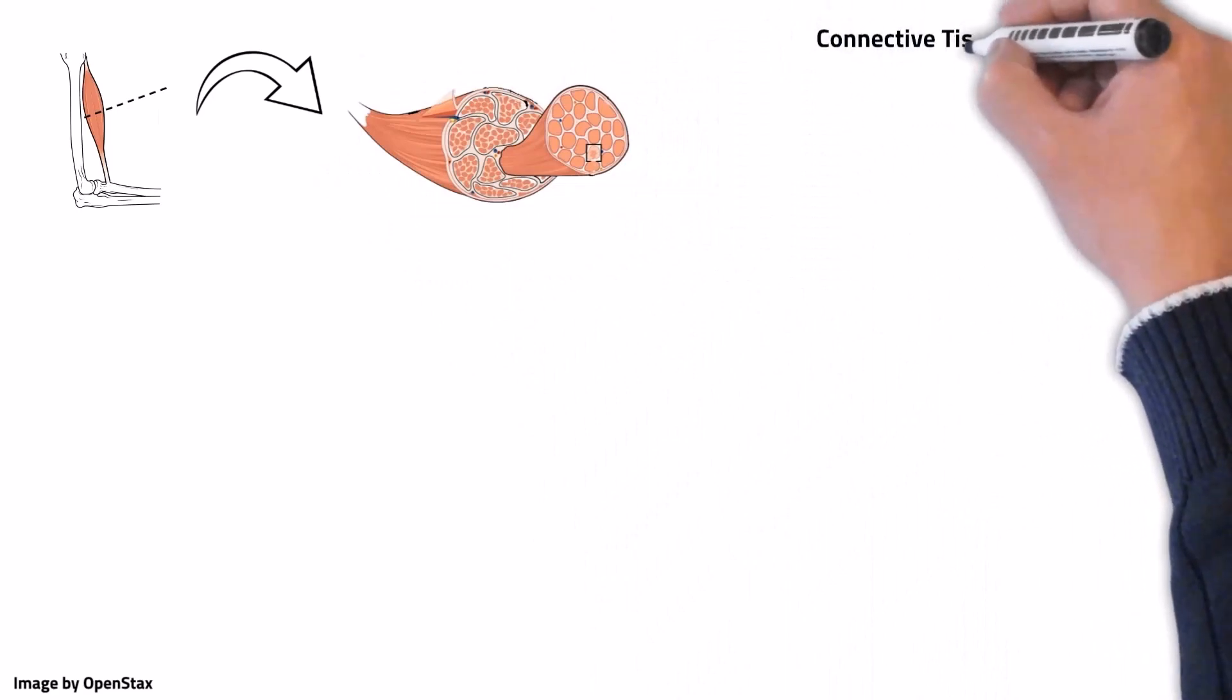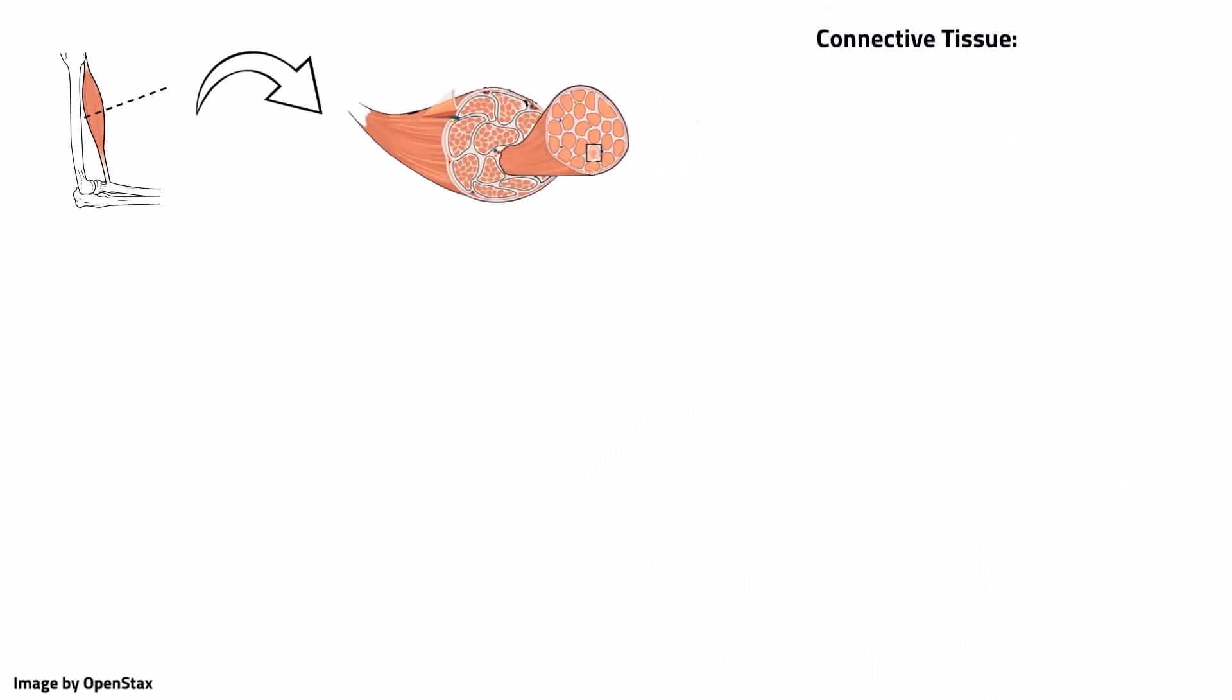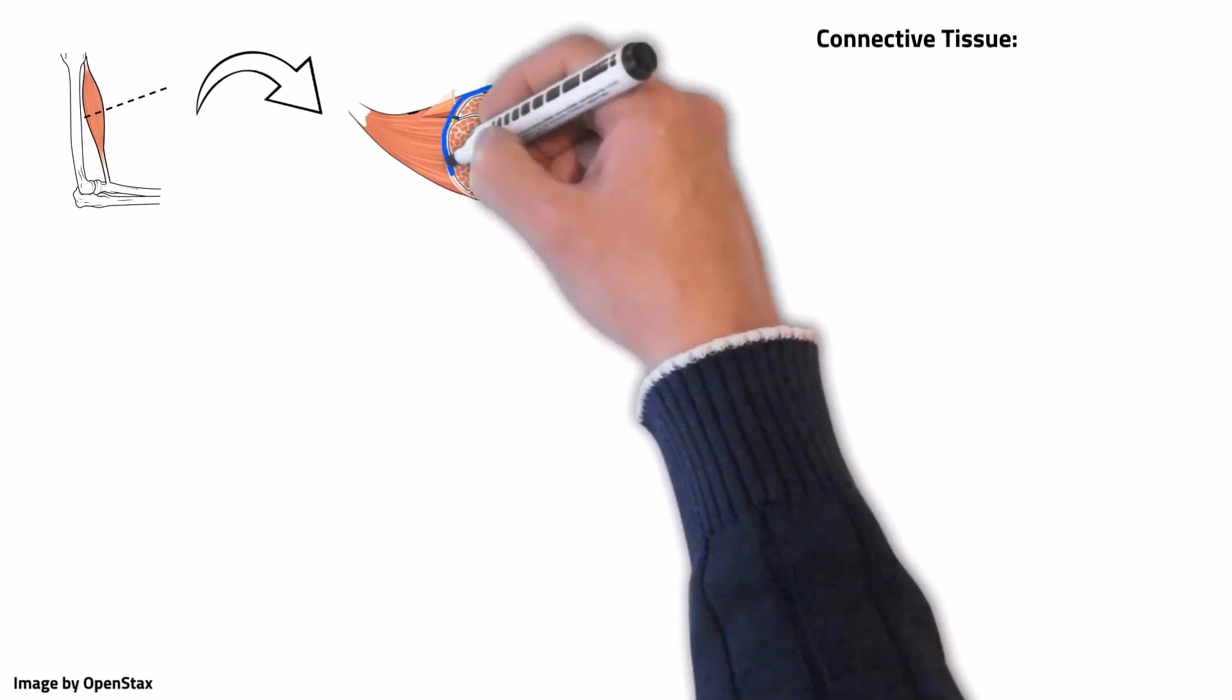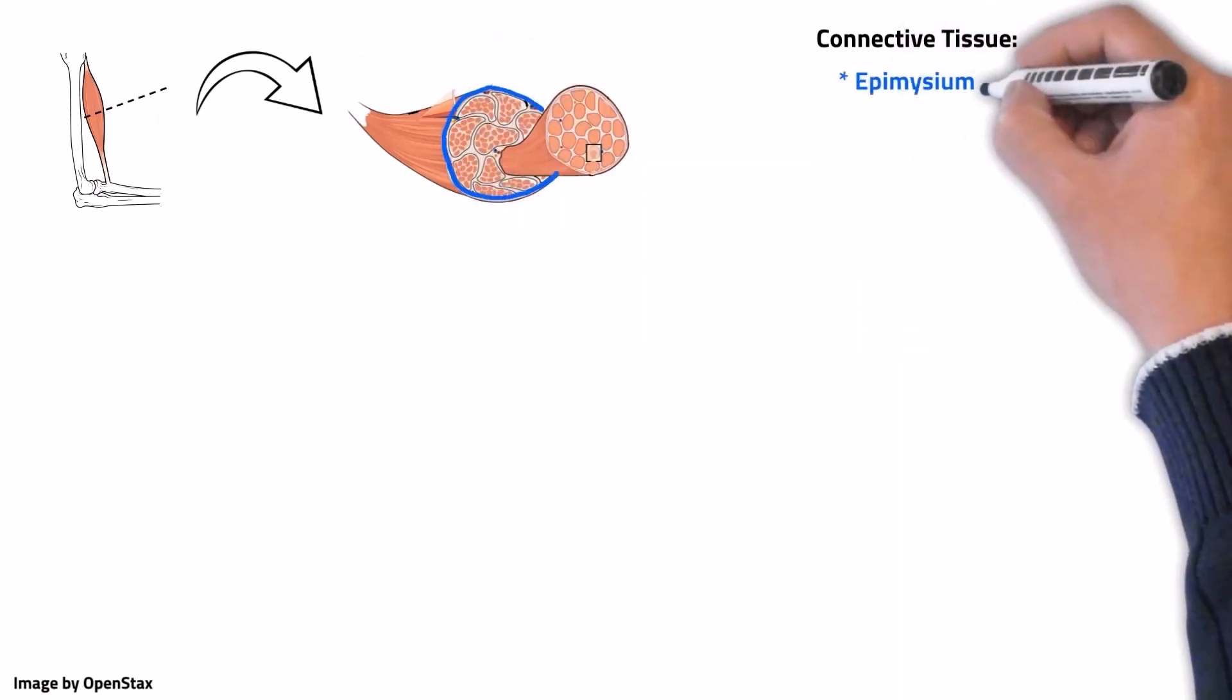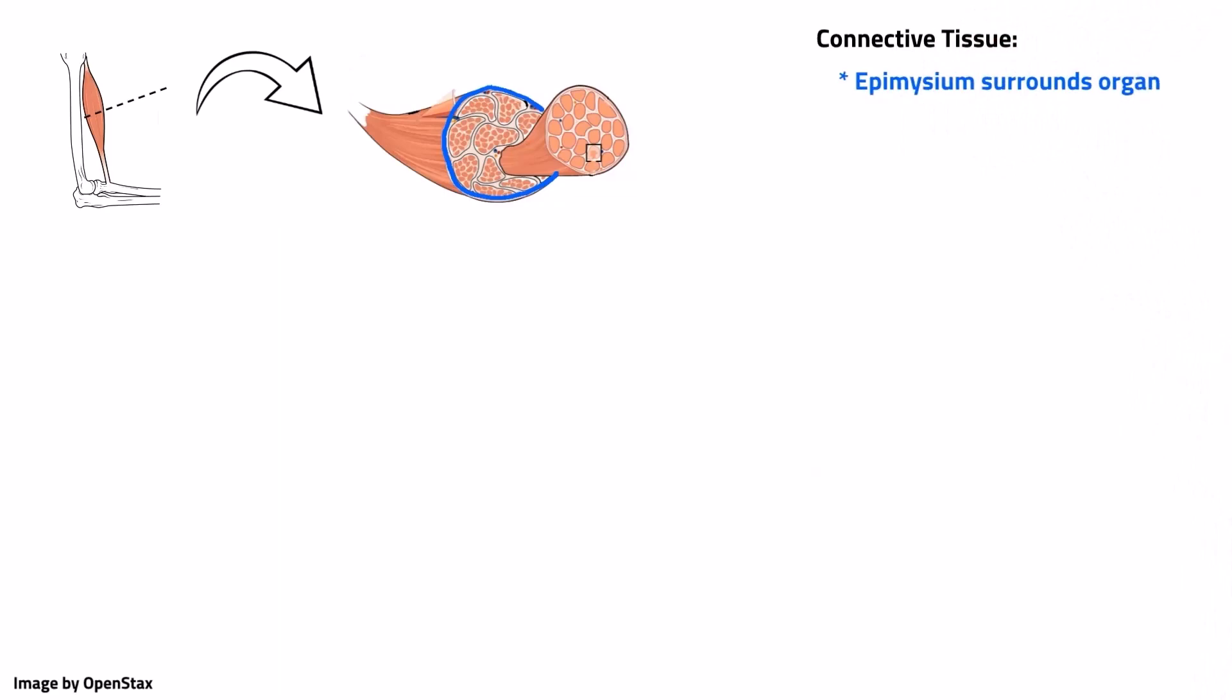There are three layers of connective tissue that maintain the shape of the muscle and serve as a route for blood vessels and nerves. The outermost layer is called the epimysium, which surrounds the entire muscle.